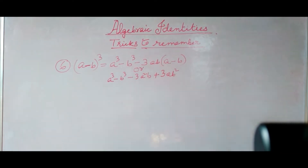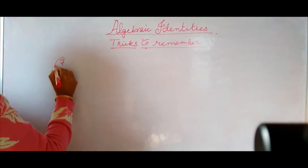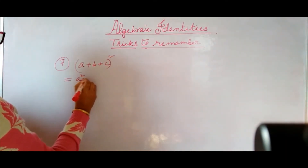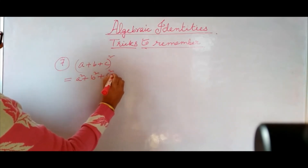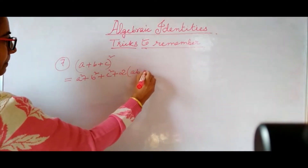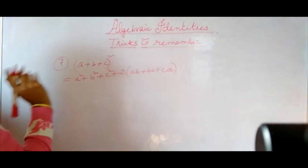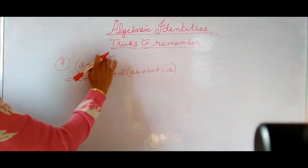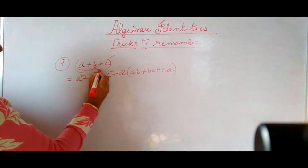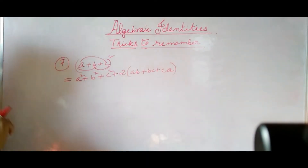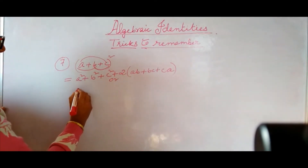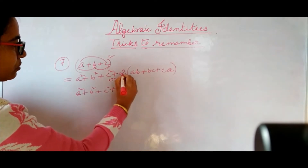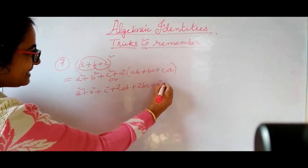So this way you can remember the identities very easily. Identity number 7 — generally students like this identity and can remember it very easily. A plus B plus C whole square is equal to A square plus B square plus C square plus 2 in bracket AB plus BC plus CA. How to remember: A square plus B square plus C square, then the power is 2, so coefficient 2, then first AB, then BC, then AC or CA. In expanded form: A square plus B square plus C square plus 2AB plus 2BC plus 2CA.